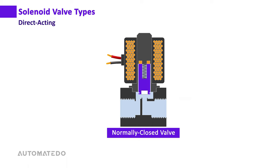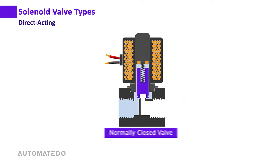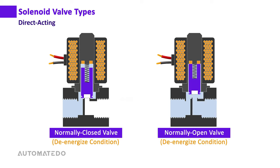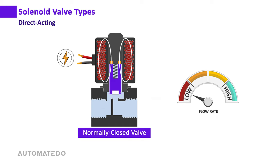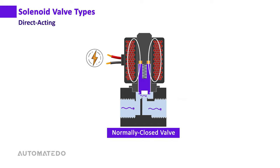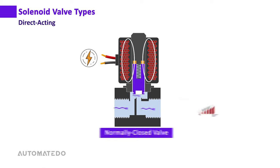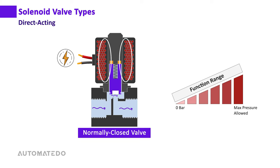Once power is interrupted and electrical current stops flowing, the magnetic field vanishes and the spring pushes the plunger back to close the valve orifice. Note that the normally open valve works the opposite way. The direct acting solenoid valve is used for relatively low flow rates and does not require differential pressure, so it can function from zero bar to the maximum allowed pressure.